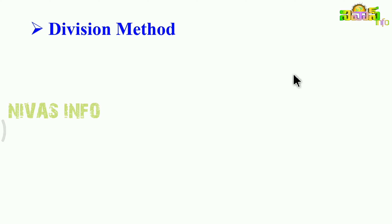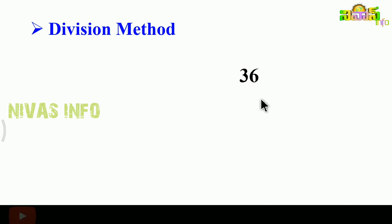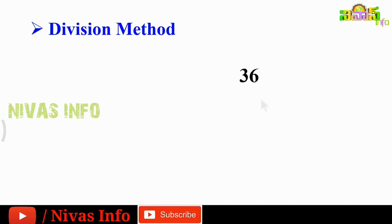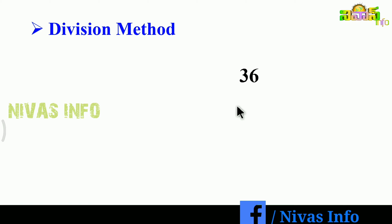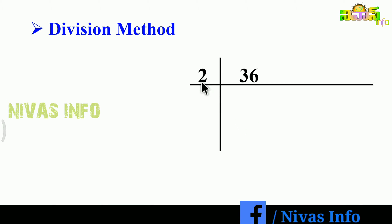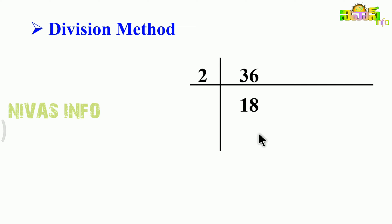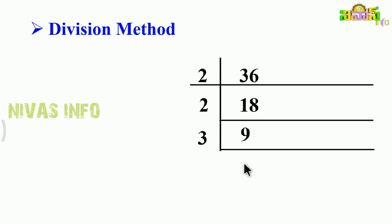For the division method, the number is 36. We start by dividing: 2 divided into 36. Next, 2 divided into 18. Then 2 divided into 9. Next, 3 divided into 9. Then 3 divided into 3. Finally, we reach 1. This is the division method for finding the prime factors of 36.